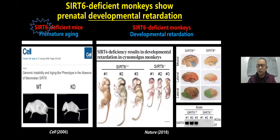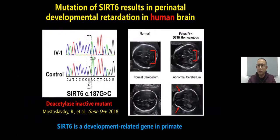Interestingly, the monkeys do not show any features of accelerated aging. Instead, they show prenatal developmental retardation. The brain of a newborn monkey with SIRT6 deficiency is very similar to that of a fetus. An independent research team also pointed out that a loss-of-function SIRT6 mutation in humans can cause prenatal developmental delay. Both studies support SIRT6 as a developmental gene in primates.